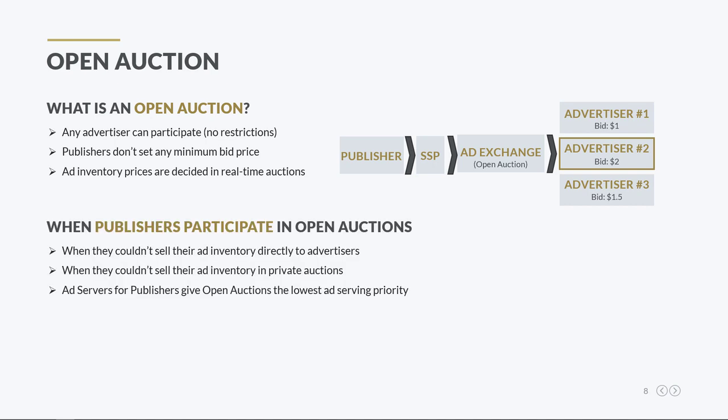As mentioned earlier in this course, publishers use ad servers to prioritize the selling of their ad spaces. In general, most of them try to sell premium ad inventory directly to advertisers at higher prices. If there is remnant ad inventory, they make it available in private auctions, and if they don't manage to sell it there, they make it available in open auctions as a solution of last resort. Therefore, ad servers for publishers typically give open auctions the lowest ad serving priority.